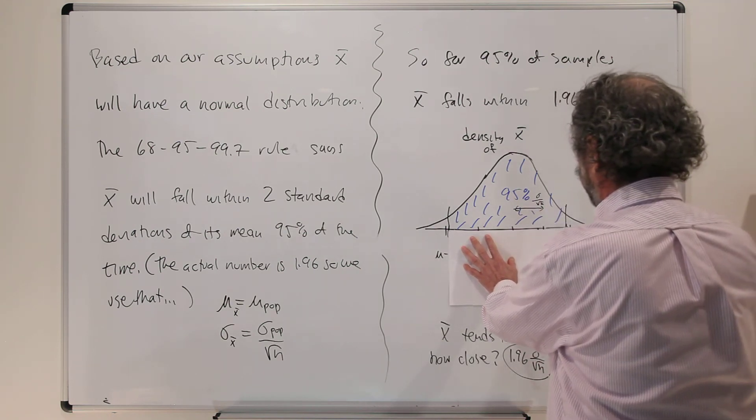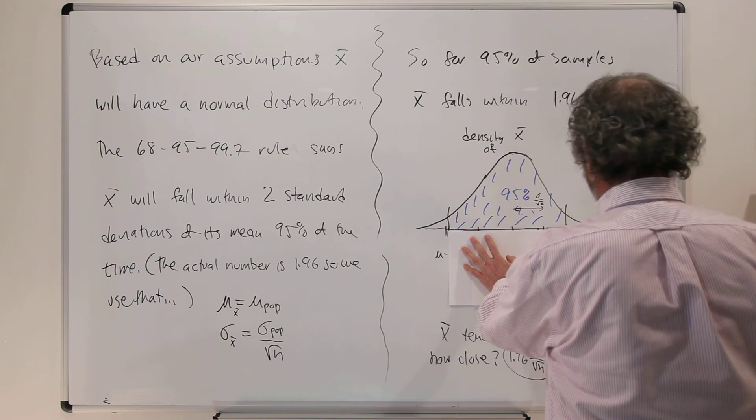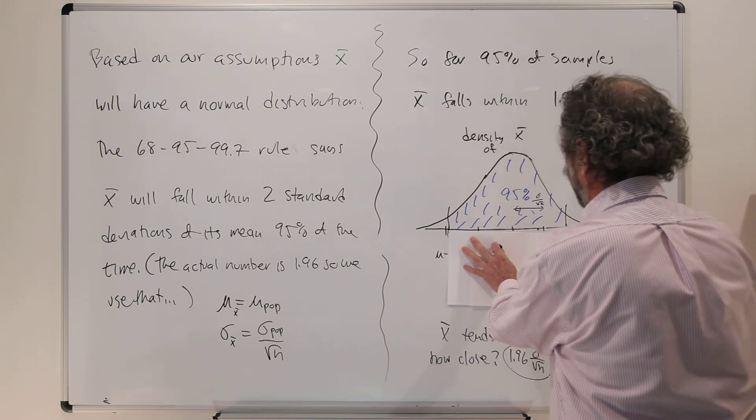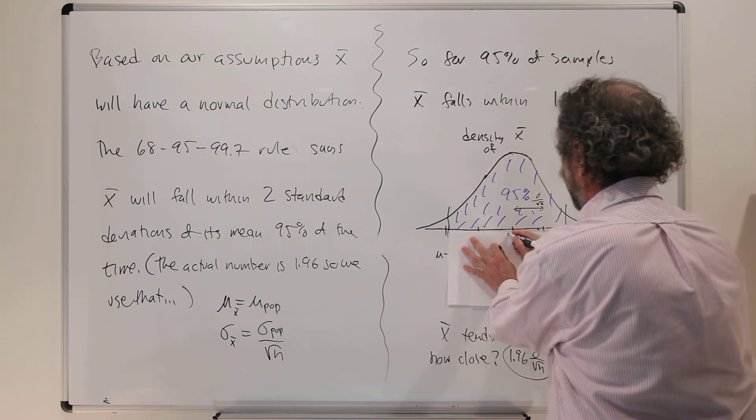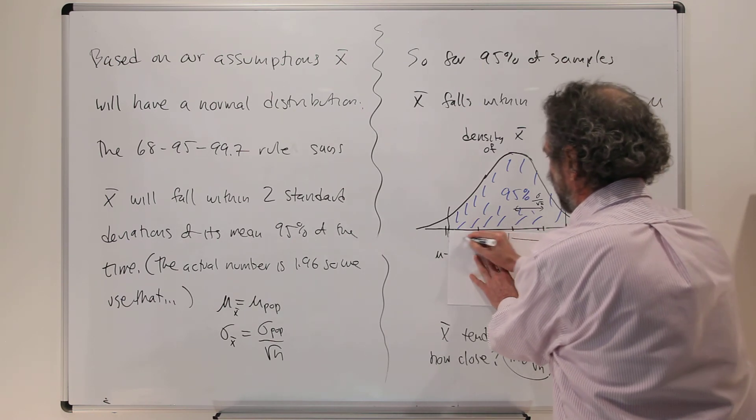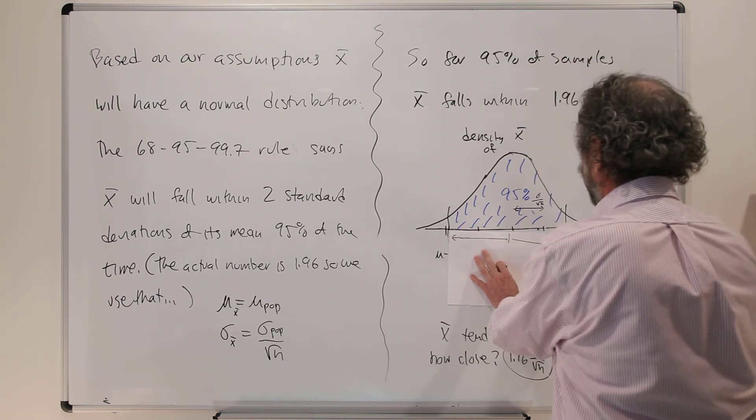Here we go. So here's mu. There's the distance, right? So for each value of x-bar we might choose, we go that distance on each side of it.